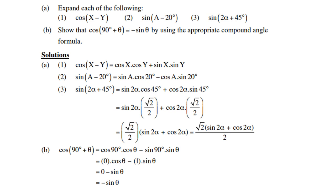You can leave it as √2/2 times (sin 2α plus cos 2α), or write it as √2 times (sin 2α plus cos 2α) over 2. Part B: show that cos(90° plus α) equals minus sin α by using the appropriate compound angle formula. Choosing the cosine compound formula with a plus: cos 90° cos α minus sin 90° sin α. Since cos 90° equals 0 and sin 90° equals 1, you get 0 times cos α minus 1 times sin α, which equals negative sin α.